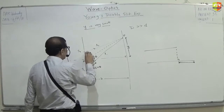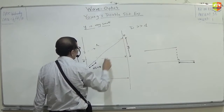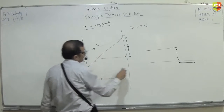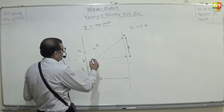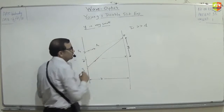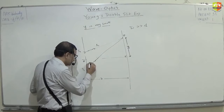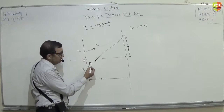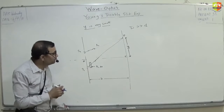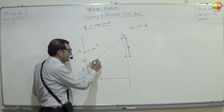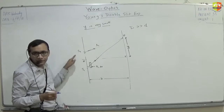Again, draw Young's double slit experiment. Suppose you are putting a glass slab over here of thickness t and refractive index mu. You need to find out the location of the central maxima. When they start from S1 and S2, there is no path difference.